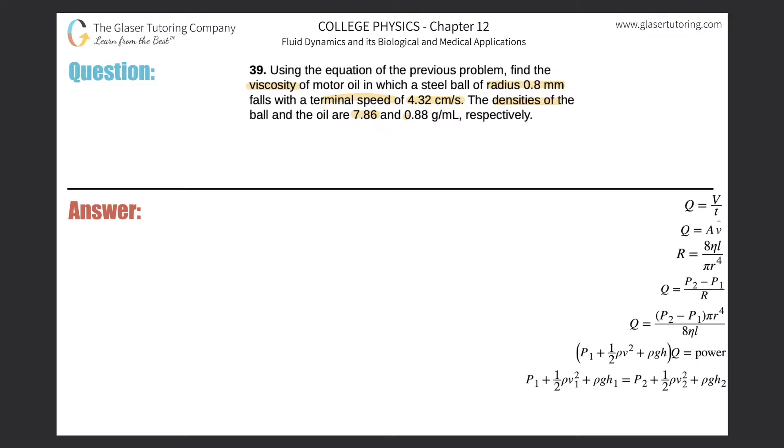The equation from the prior problem was this: the terminal velocity will be equal to 2 multiplied by the radius of solid object squared, multiplied by g, all divided by 9 times the viscosity. That whole thing multiplied by the density of the solid minus the density of the liquid.